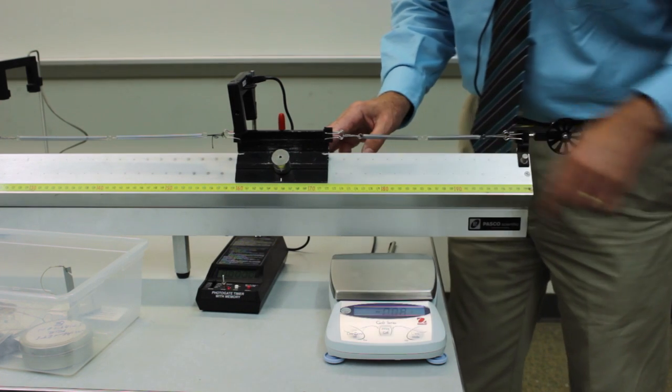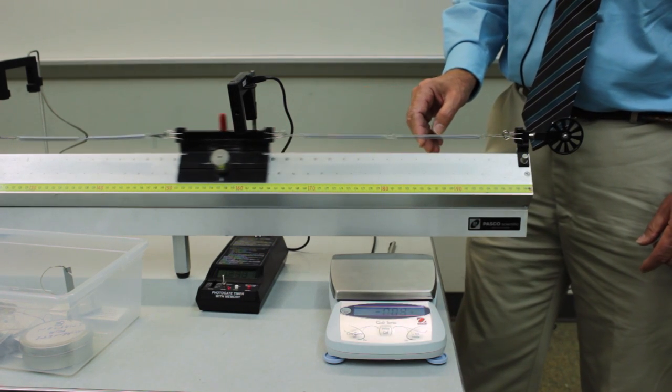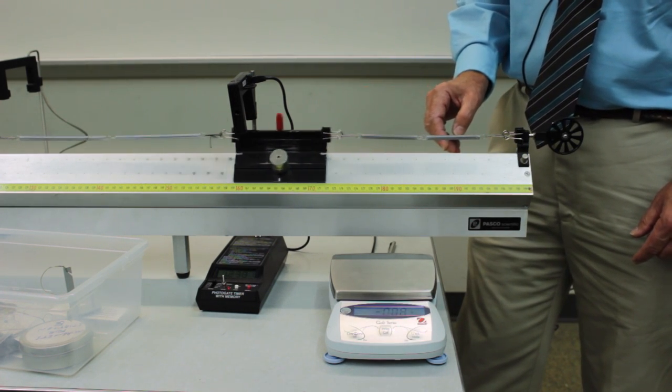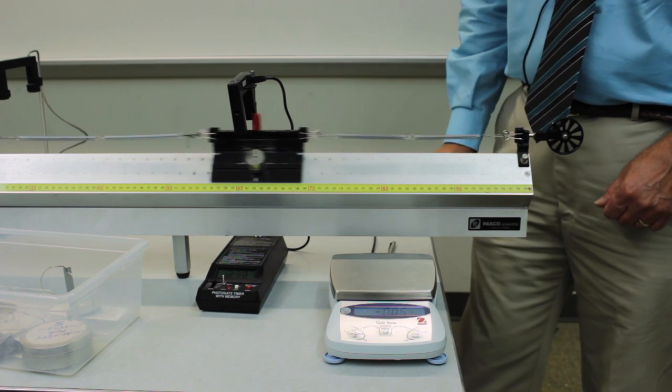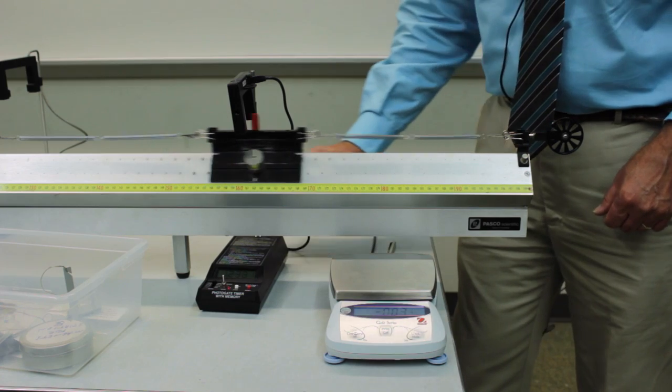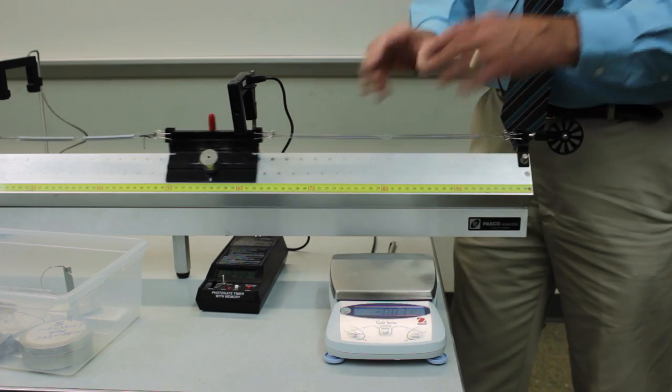Then just make another set of period measurements with the increased mass. So that will give you three different sets of measurements for three different masses. But the same spring constant.